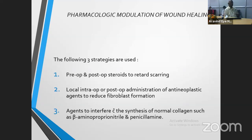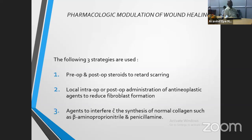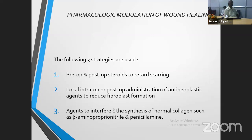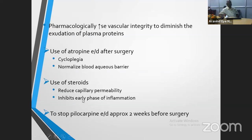The second approach is local intraoperative or postoperative administration of anti-neoplastic agents, which we'll see in the second part of the talk — mainly to reduce fibroblastic proliferation. Third, agents that can interfere with normal collagen synthesis, such as beta-aminopropionitrile (BAPN) or penicillamine — chelating agents that affect collagen synthesis. Even though they have beneficial effects, we are not regularly using them in anti-glaucoma surgery, though they are used in some other conditions.